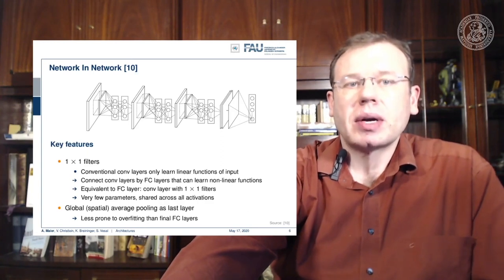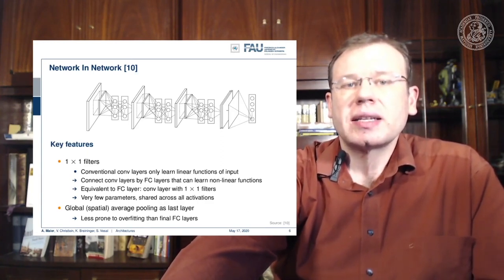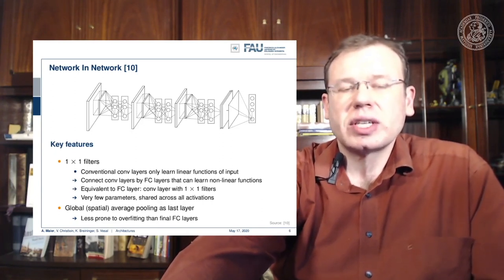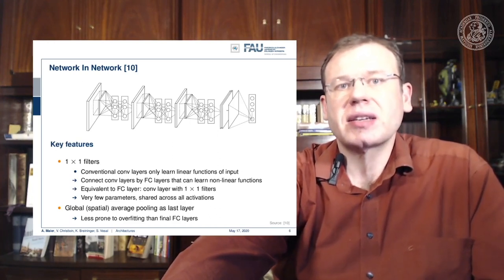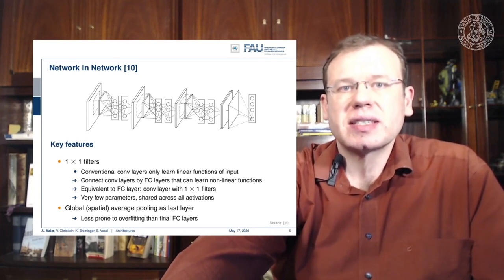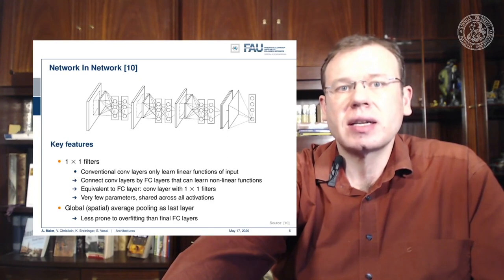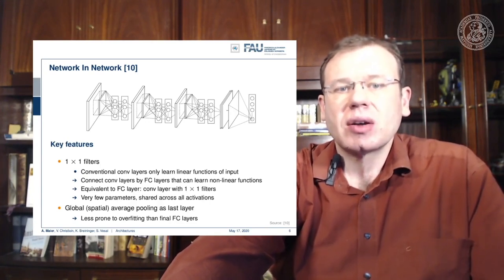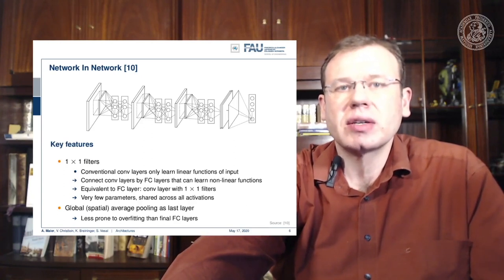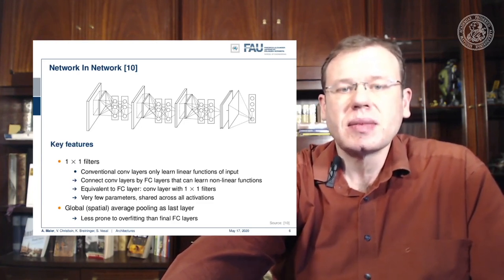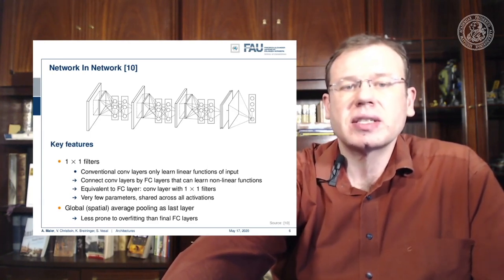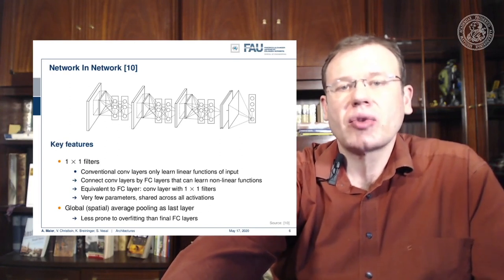Another key paper is the Network-in-Network paper, which introduced 1×1 filters. Originally described as a network in network, we know it today as 1×1 convolutions — they essentially introduce fully connected layers over the channels. We use this recipe a lot when we want to compress channels by fully connecting over the channel dimension. This is equivalent to a fully connected layer and enables the concept of fully convolutional networks. It also introduces global spatial average pooling as the last layer, and this is essentially the birth of fully convolutional neural networks.